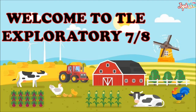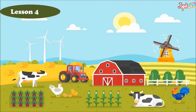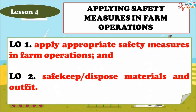Welcome to TLE Exploratory 7 and 8. Today, we will continue our topic in Agriculture and Crop Production. For today's video, we will tackle Lesson 4: Applying Safety Measures in Farm Operations. Learning Outcome 1: Apply Appropriate Safety Measures in Farm Operations, and Learning Outcome 2: Safe Keep and Dispose Materials and Outfit.